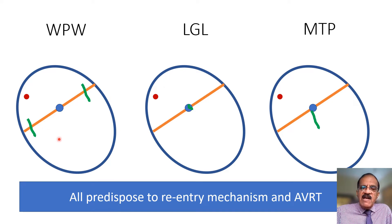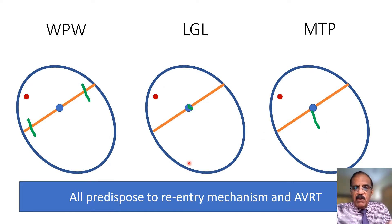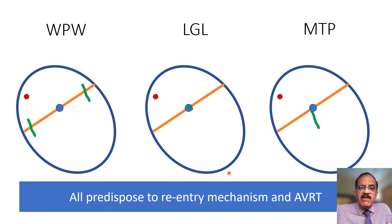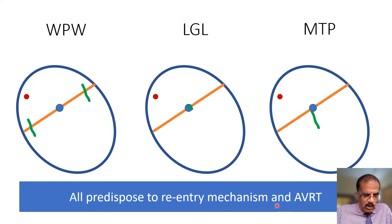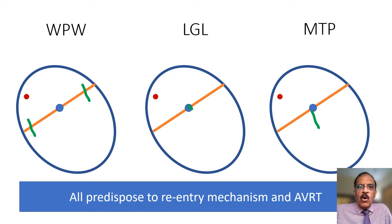Whatever type of defect is present, whether visible on ECG or not, all of them predispose to atrioventricular reciprocating tachycardia. That is the common factor, and they are all collectively called pre-excitation syndromes.